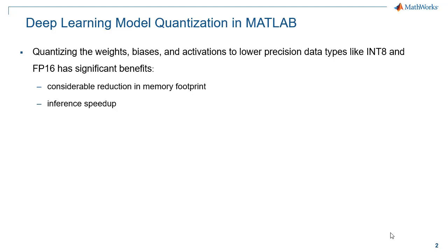Quantizing the weights, biases, and activations to lower precision data types like INT8 or FP16 significantly reduces the memory footprint of the AI algorithm and can result in improved inference performance on the embedded hardware.